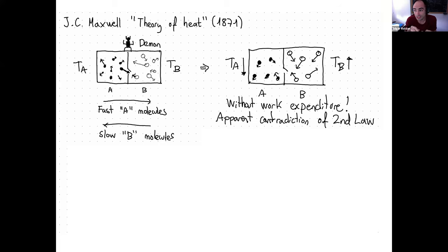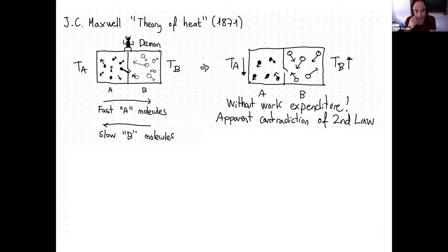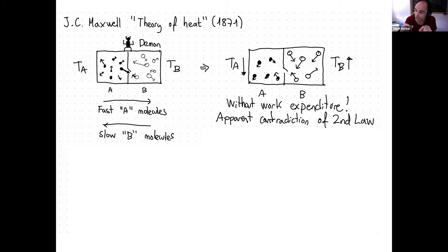But what if now you think of a tiny demon, a small intelligent being, that can control a tiny door between these containers and open it and close it selectively in a clever way? When the demon sees that a molecule in the cold bath has an instantaneous velocity higher than the average, it opens the gate, because this particular molecule is hotter than the average. So it lets hot particles move to the hot bath and cold particles move to the cold bath. In this way, the demon can achieve that the cold bath gets colder and the hot bath gets hotter.